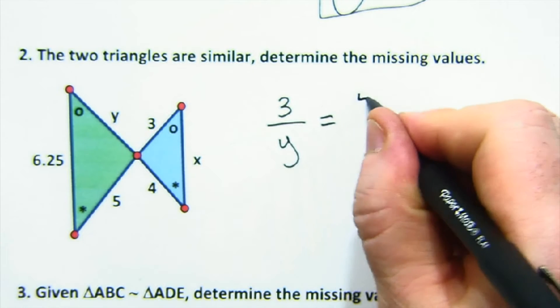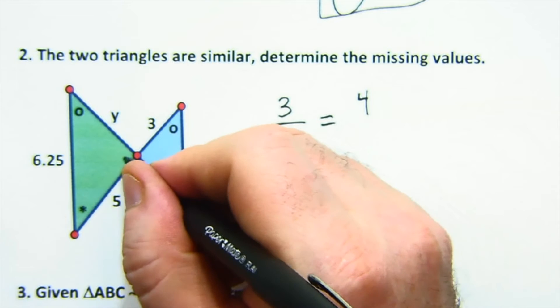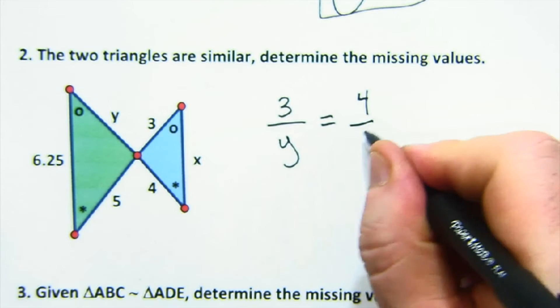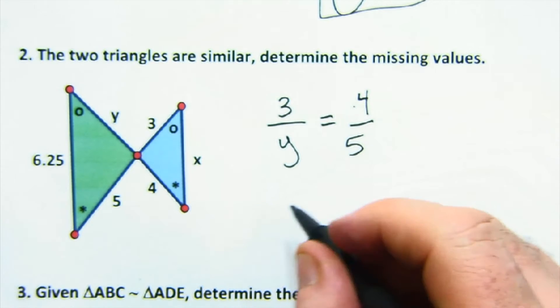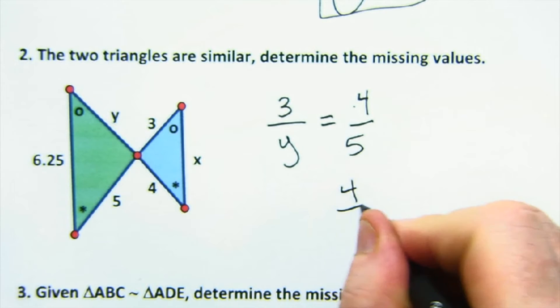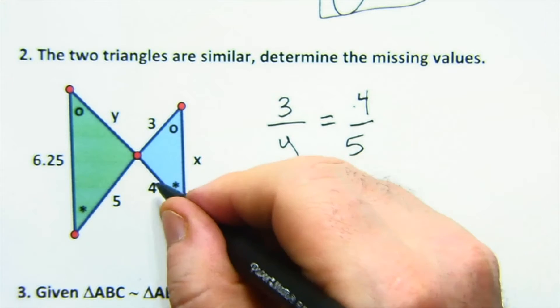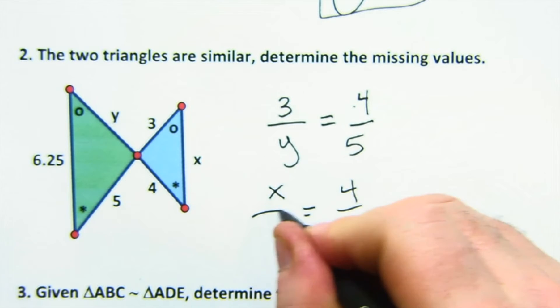So let's try the four. The four here is between the vertical angle and the star, which is the vertical angle star is two to five. There it is. So three is to y as four is to five in this case. And then we could do the same thing. Four is to five, four is to five as x is to six point two five.